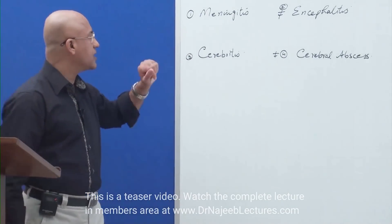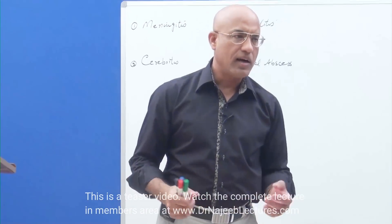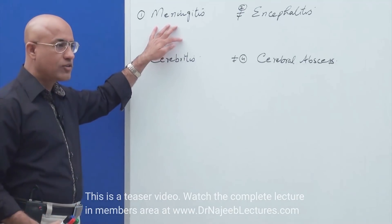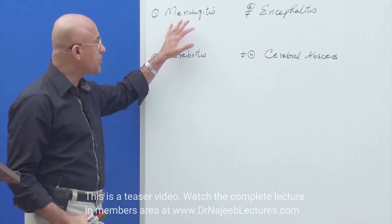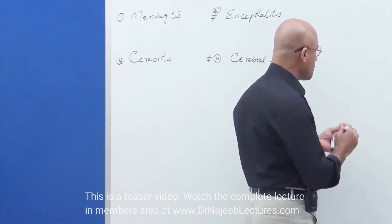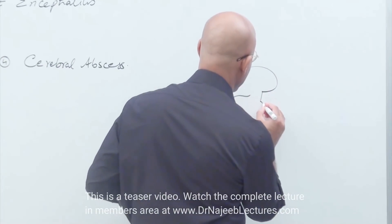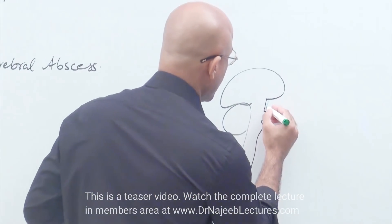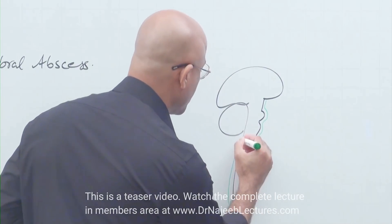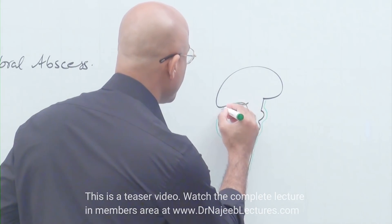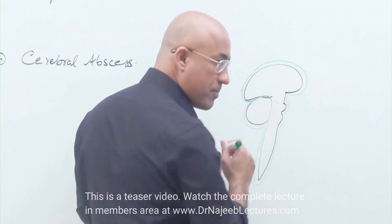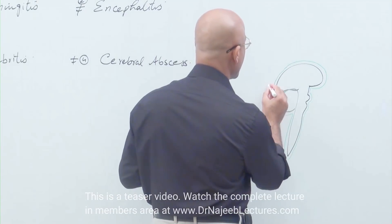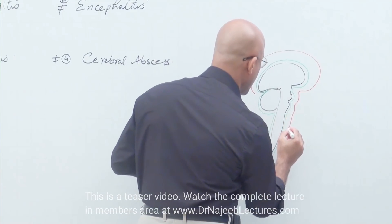How do we really define meningitis? The definition is very simple — it is inflammation of the meninges. But really, that is not the exact definition. Let me make it more clear. Here is your central nervous system, and the protective layer intimately related with the central nervous system is called the piamater.